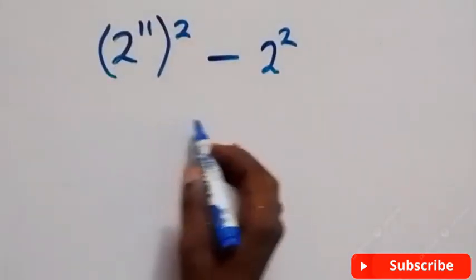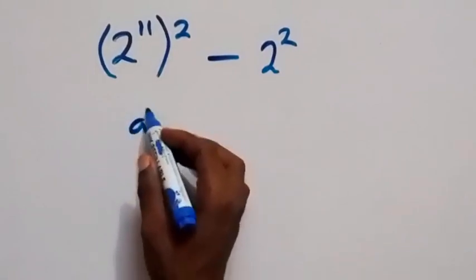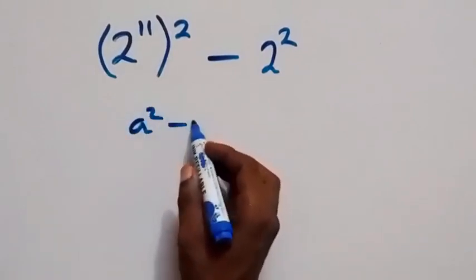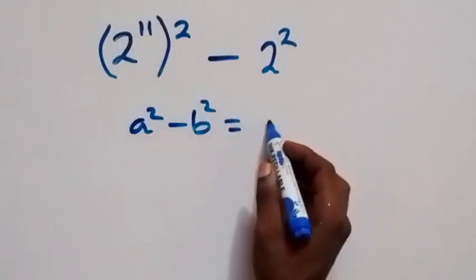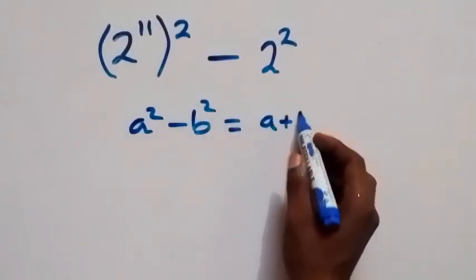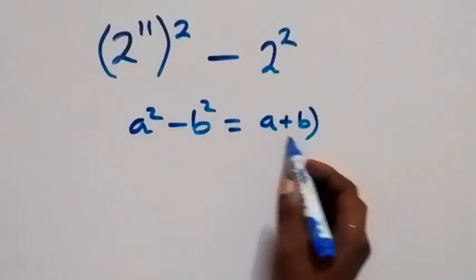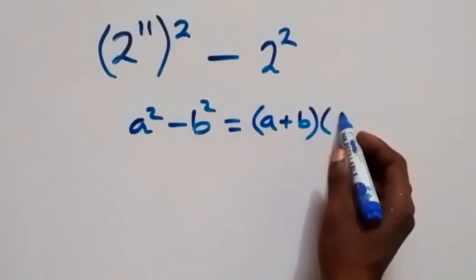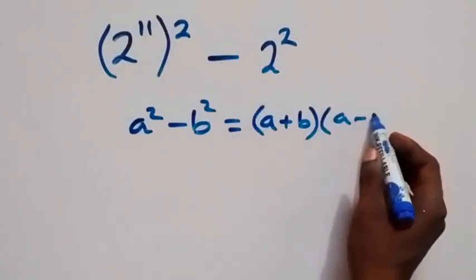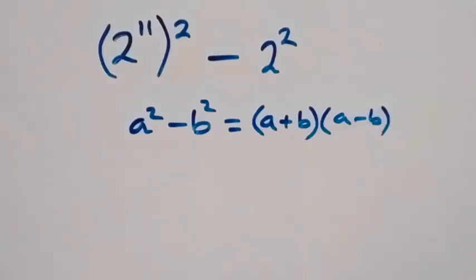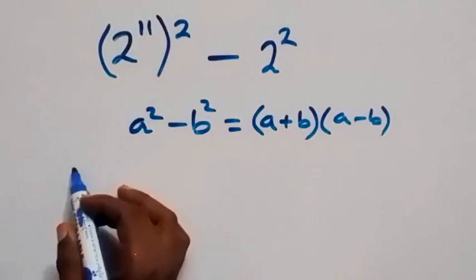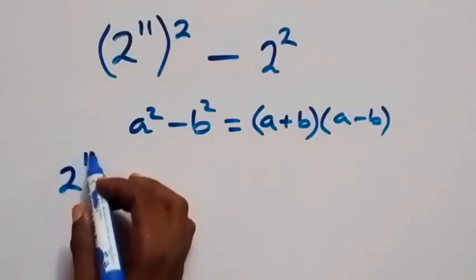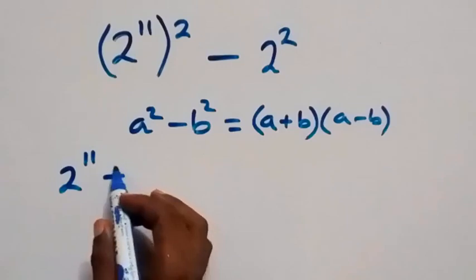Then applying the difference of two squares: when we have a squared minus b squared, this gives us a plus b multiplied by a minus b. So when we use this here, this becomes 2 raised to power 11 plus 2, multiplied by 2 raised to power 11 minus 2.